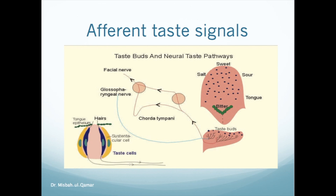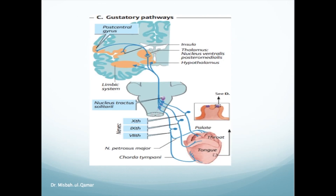Afferent signals, through the axons of first-order neurons, enter the nucleus of tractus solitarius, located in the brainstem — precisely in the medulla oblongata — through the solitary tract. The neurons of tractus solitarius are thus the second-order neurons, and their axons run through the medial lemniscus.